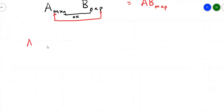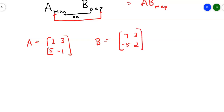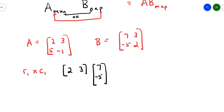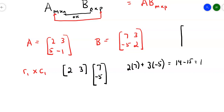Let's try one. Suppose matrix A is [2, 3; 5, -1] and matrix B is [7, 3; -5, 2]. I start with the first row of matrix A and the first column of matrix B. Row 1 is 2, 3 and column 1 is 7, -5. So I take 2×7 plus 3×(-5): 14 minus 15 is -1. That -1 goes in row 1, column 1 of the answer matrix.